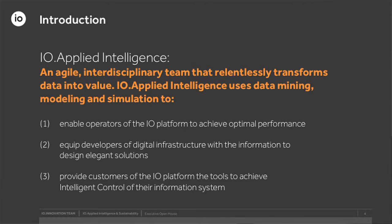Definition of IO Applied Intelligence: agile, interdisciplinary team. We will be taking on different data-driven opportunities around us with a varied set of stakeholders with different perspectives. We're taking the data that we have both from the OS, from our sales team, from customer accounts, and using that to create value. The methods to do that include data mining, modeling, simulation. You'll hear a lot more about those in detail over the hour.